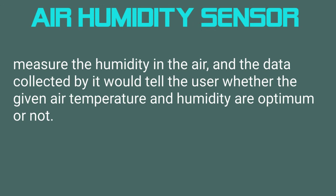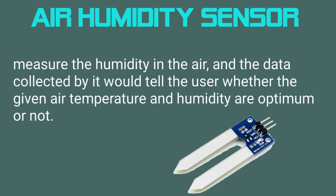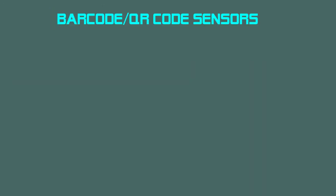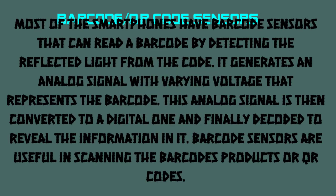Air Humidity Sensor measures the humidity in the air, and the data collected by it tells the user whether the given air temperature and humidity are optimum or not. Barcode/QR Code Sensors — most smartphones have barcode sensors that can read a barcode by detecting the reflected light from the code. It generates an analog signal with varying voltage that represents the barcode, which is then converted to a digital signal and finally decoded to reveal the information. Barcode sensors are useful when scanning barcode products or QR codes.